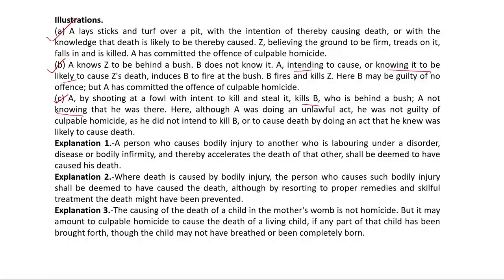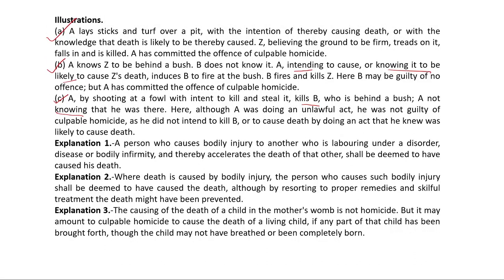Students, there are certain explanations appended to section 100 to further bring in more clarity as to what amounts to culpable homicide. Explanation 1 reads: a person who causes bodily injury to another who is labouring under a disorder, disease, or bodily infirmity, and thereby accelerates the death of that other, shall be deemed to have caused his death. This is a deeming provision which creates a sort of presumption: if it is your act that has resulted in death — although the person was already suffering from any kind of a disease or infirmity — but it was your act that accelerated the death, then you would be responsible for causing the death of such a person.